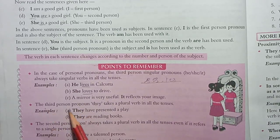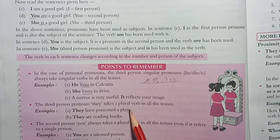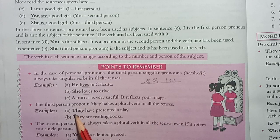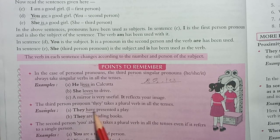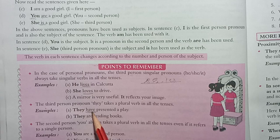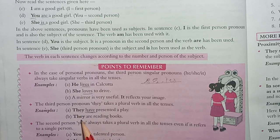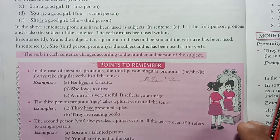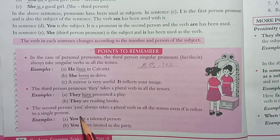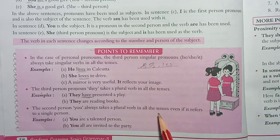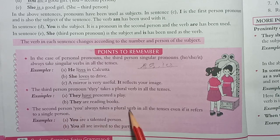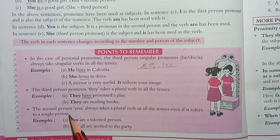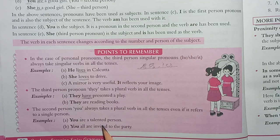The third person pronoun 'they' takes a plural verb in all tenses. For example, 'they have presented', 'they are reading'. The second person pronoun 'you' always takes a plural verb in all tenses, even if it refers to a single person.